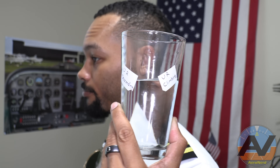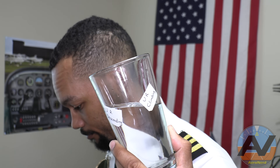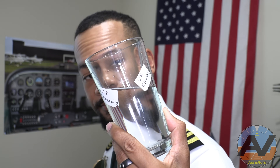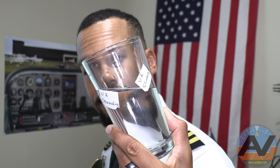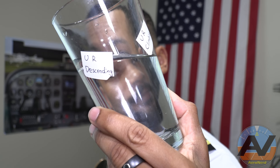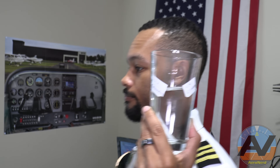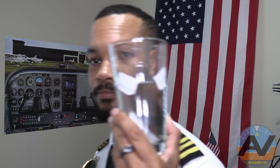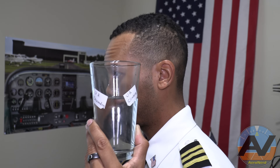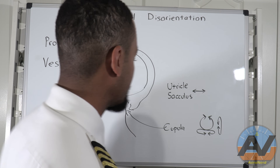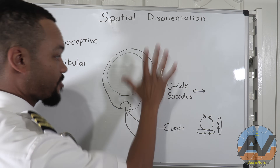Now if I go into a steep descent, you can see how the water lines up with the descent. But what happens if you're straight and level and you do an abrupt forward motion? That can also tell your brain that you're actually going to climb. And vice versa — the same thing happens if you come to an abrupt halt. The sensory nerves will tell your brain that you must be descending, even though you're not. This is literally how all of this works.